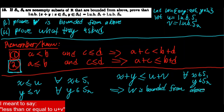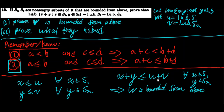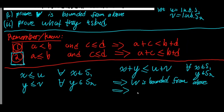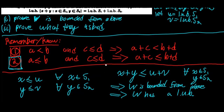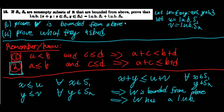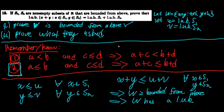Moreover, since W is non-empty (because s1 and s2 are non-empty) and bounded from above, W has a least upper bound by the least upper bound property of the real numbers. We can also note that u + v is an upper bound of W, which will be helpful later. We've now proven part one, and I'll clear the board to prove part two.